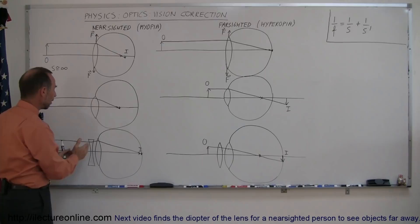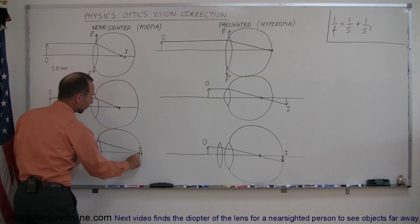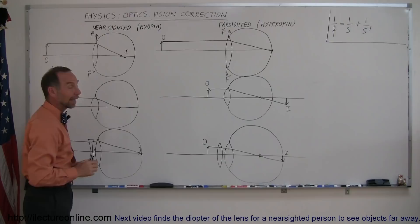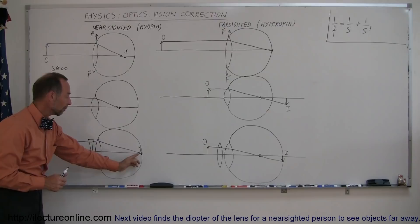It causes the focal point to fall further back, and then an object that's far away can then form an image right on the retina like that. So that's why when you're nearsighted, you need a diverging lens to put the focal point further back so an image can form clearly on the retina when you look at things that are far away.